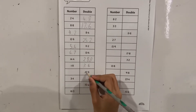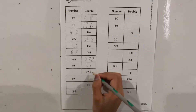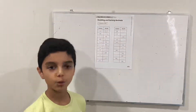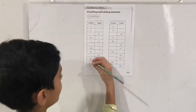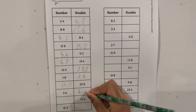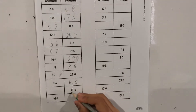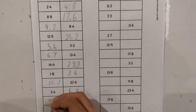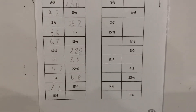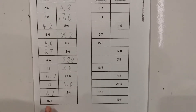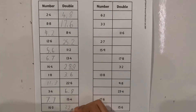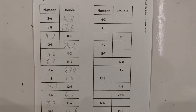And then 22.6 halved is 11.3. Can you solve these questions with me? So 3.4 doubled is 6.8, then 15.4 halved is 7.7, and 16.3 doubled is 32.6 — that's quite big!